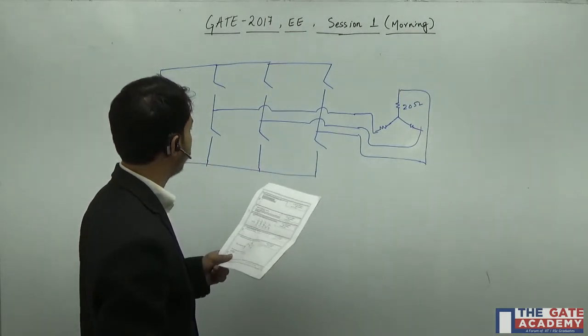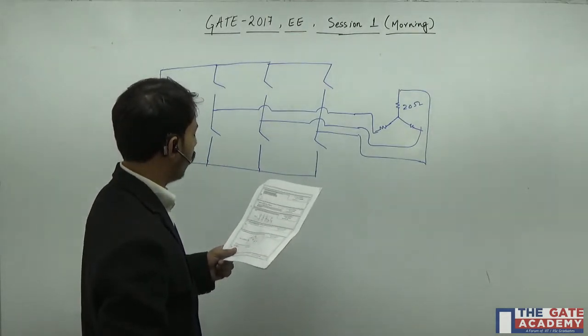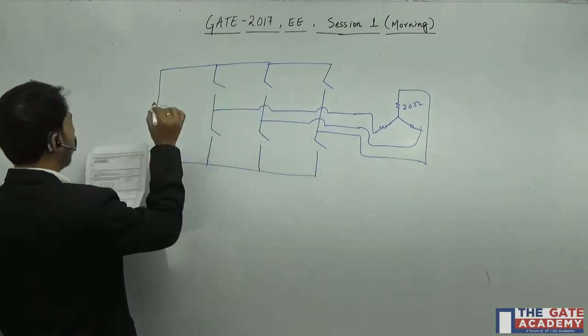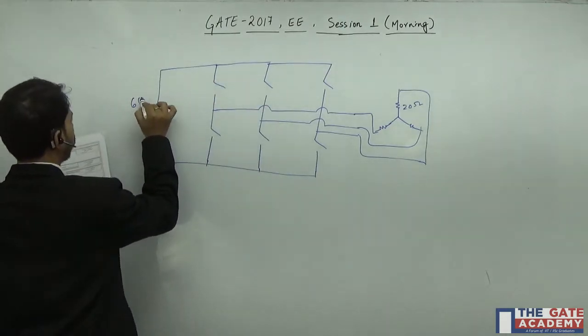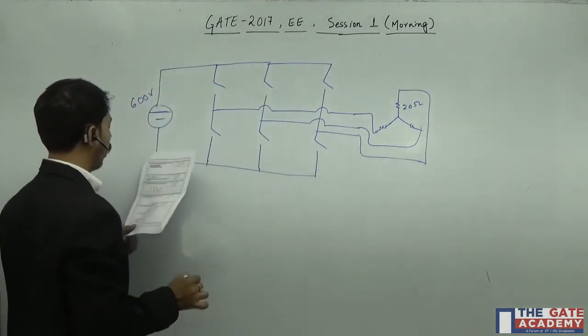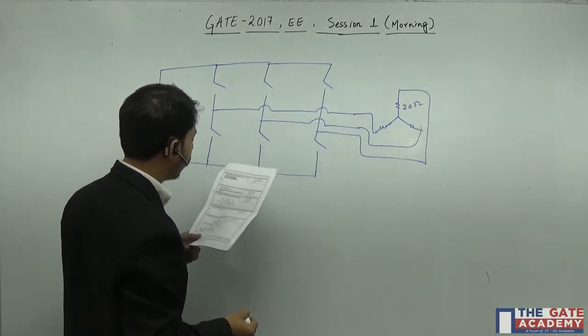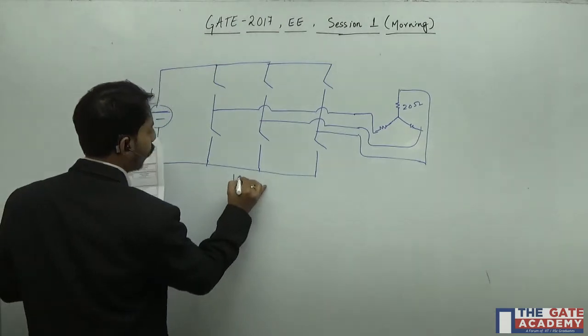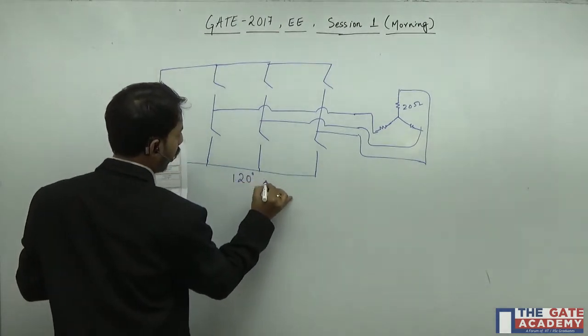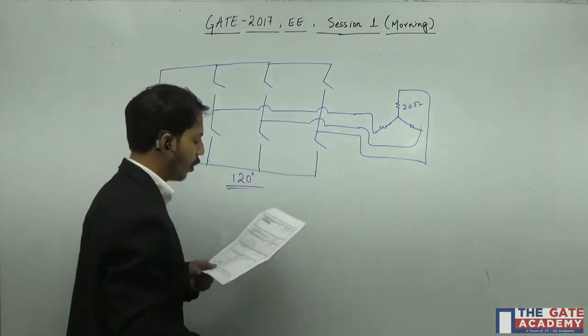Now each of them is 20 ohms. Now what is asked in the question is, what is given is the value of this DC source is 600 volts. And what else is given?